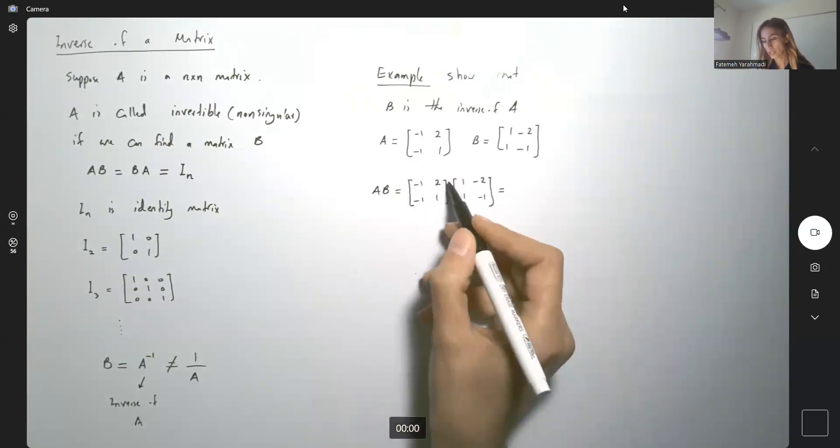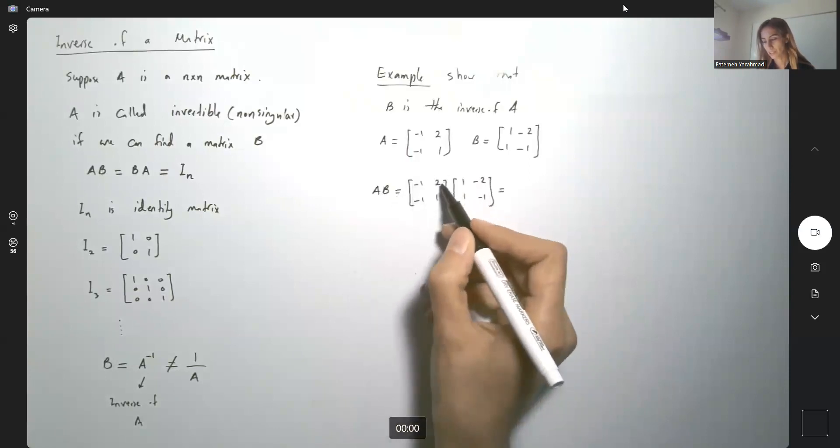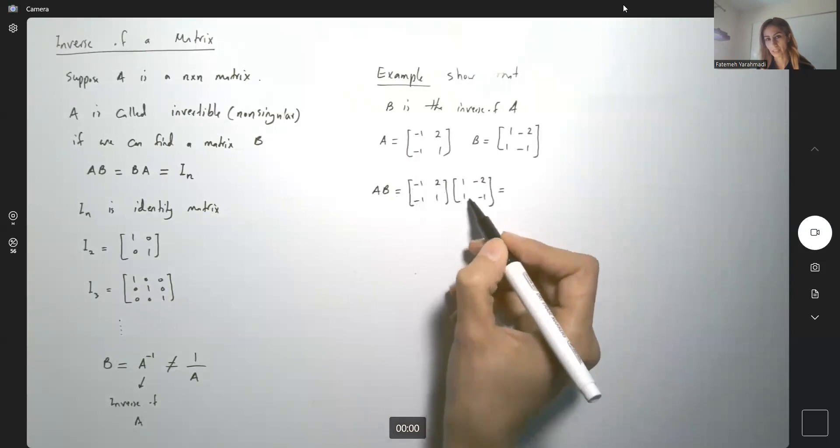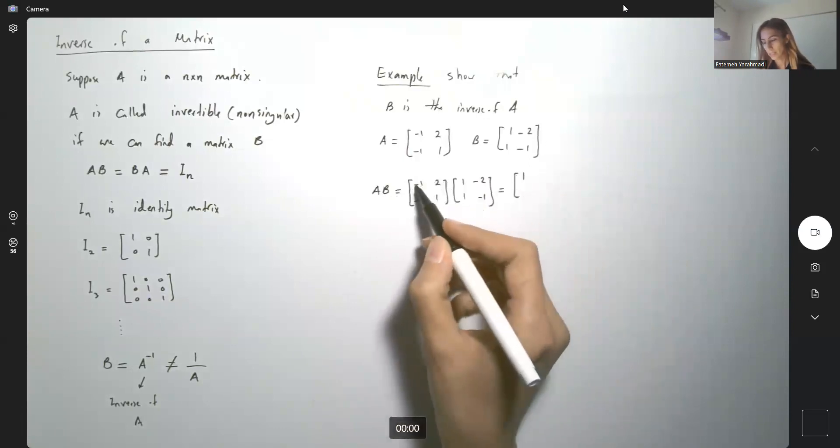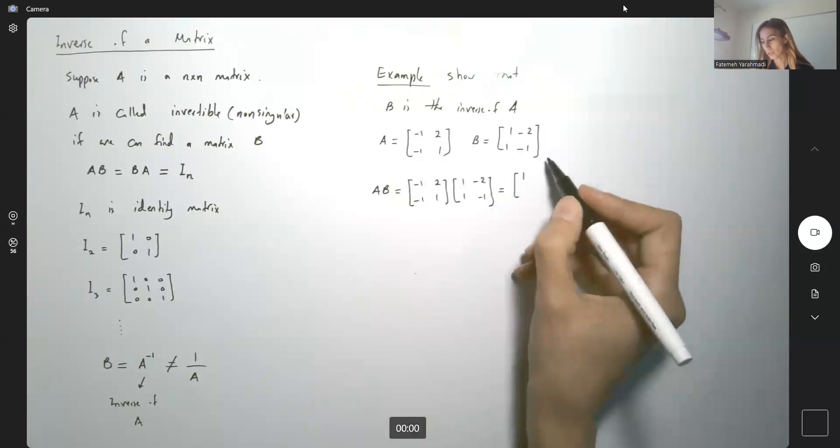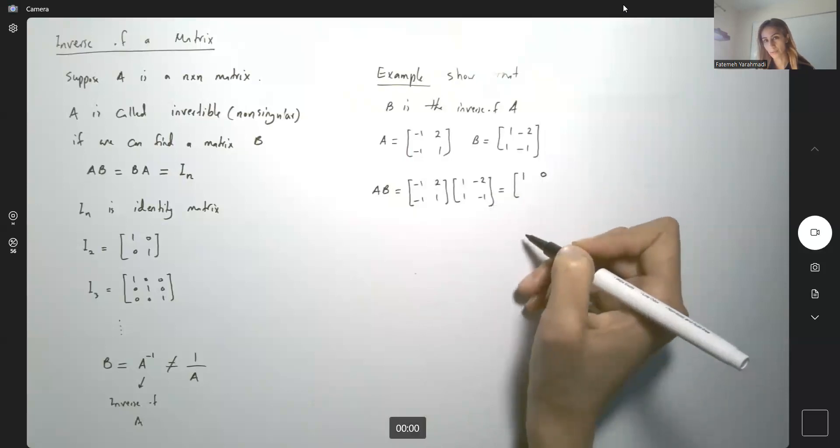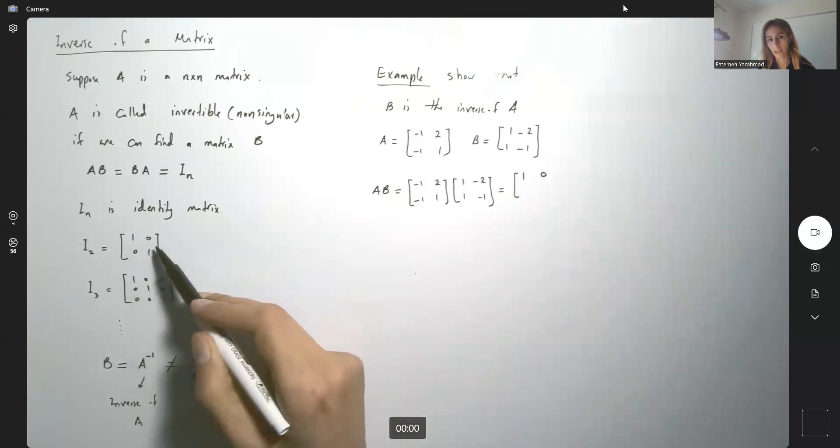Remember the multiplication. It's the dot product between vectors. The very first vector dot product with the second vector. Negative 1 times 1, negative 1. And here you have 2 times 1, 2. The outcome is equal to 1. Then negative 1 and negative 2, which is 2 plus 2 times negative 1 gives us 0. So far so good. So far I got the very first row of I2.